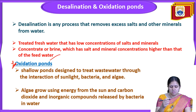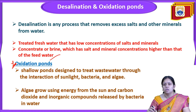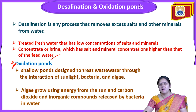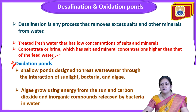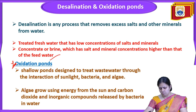In the oxidation pond, a shallow pond is designed to treat wastewater through the interaction of sunlight, bacteria, and algae by the process of oxidation. Algae grow using energy from the sun and carbon dioxide, along with inorganic compounds released by bacteria in the water.